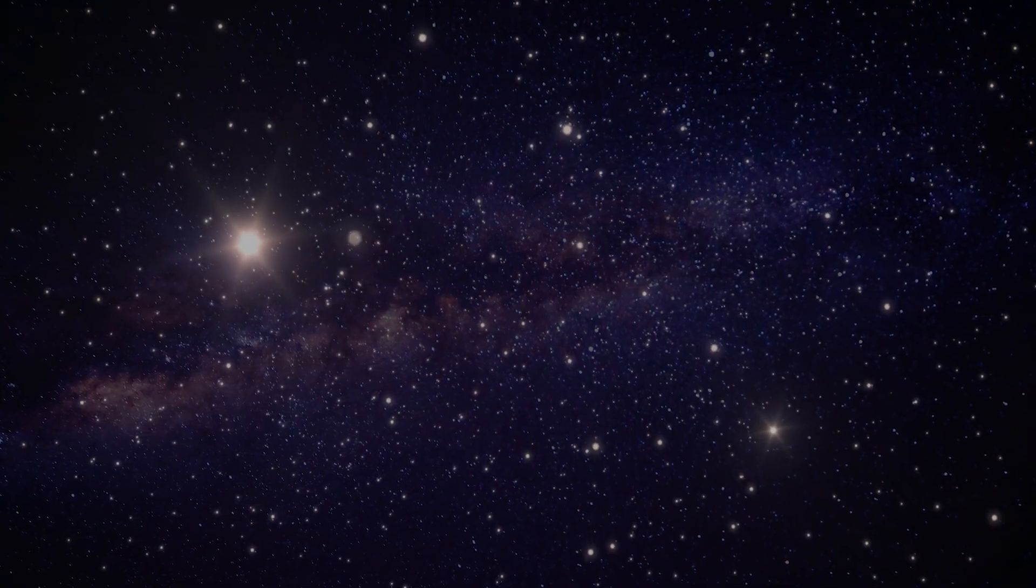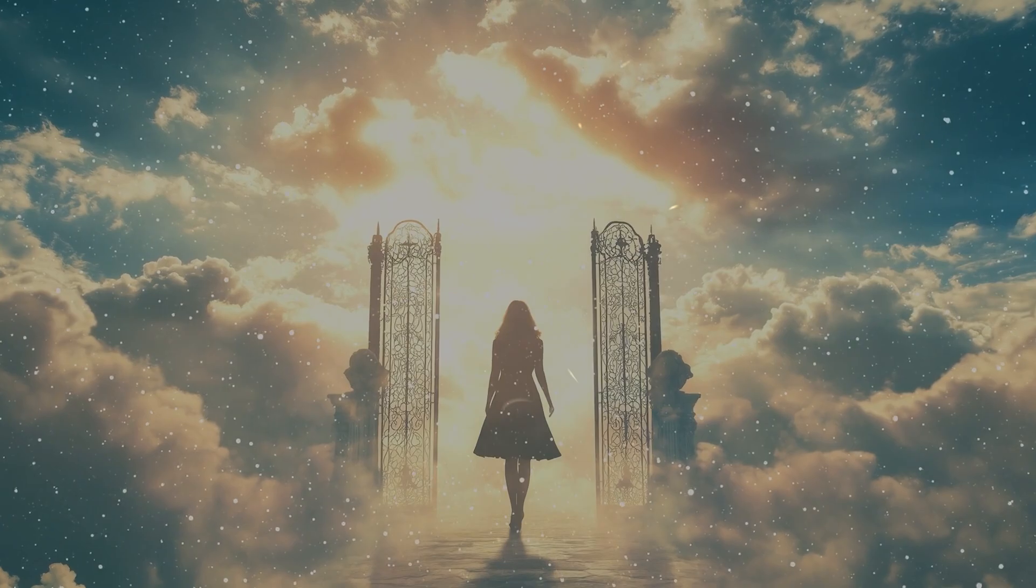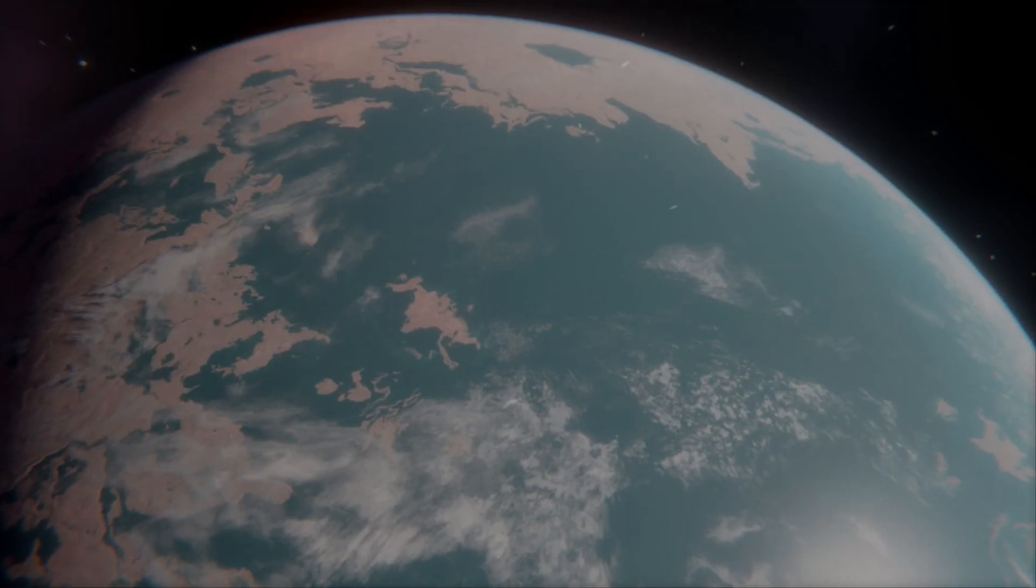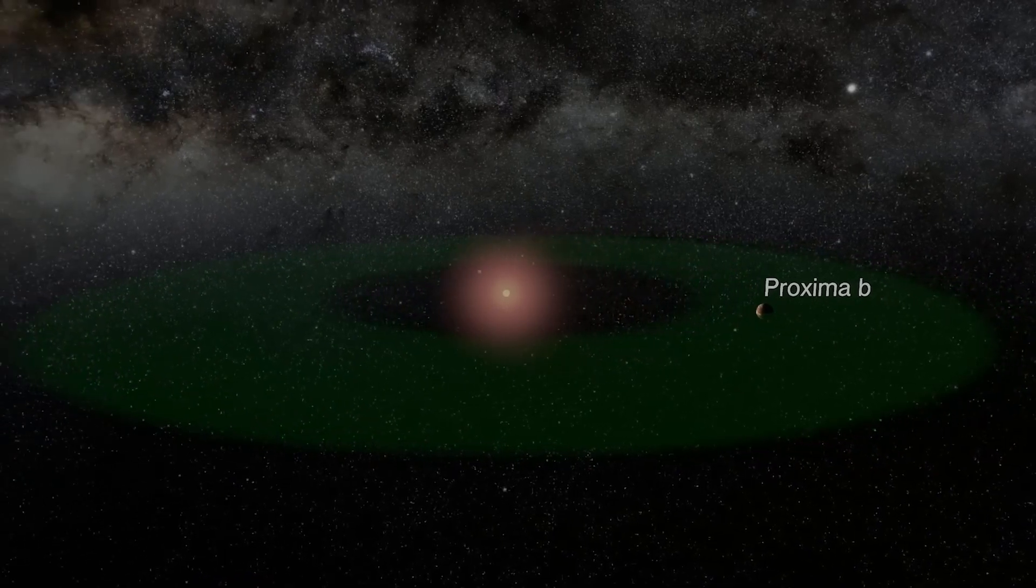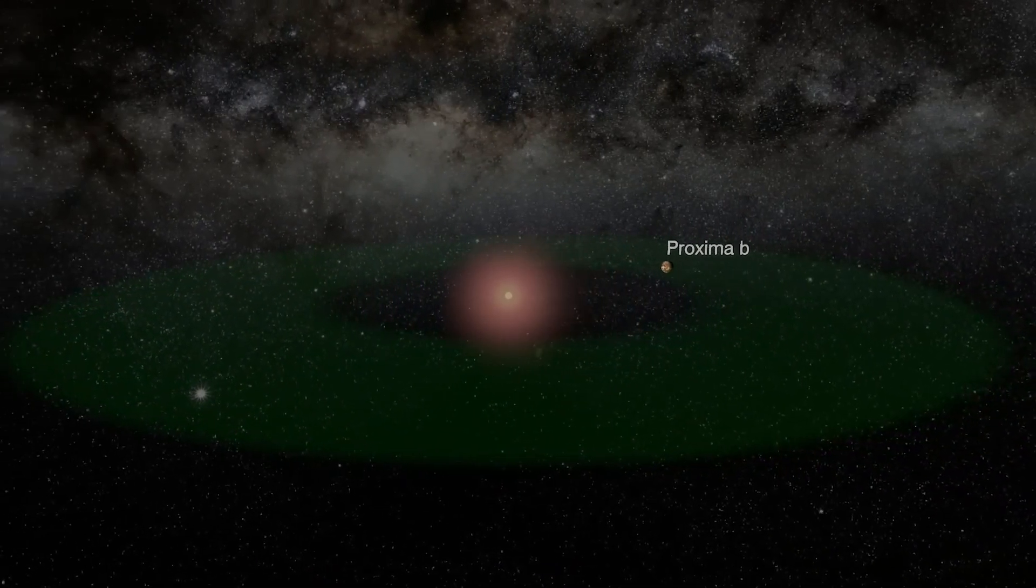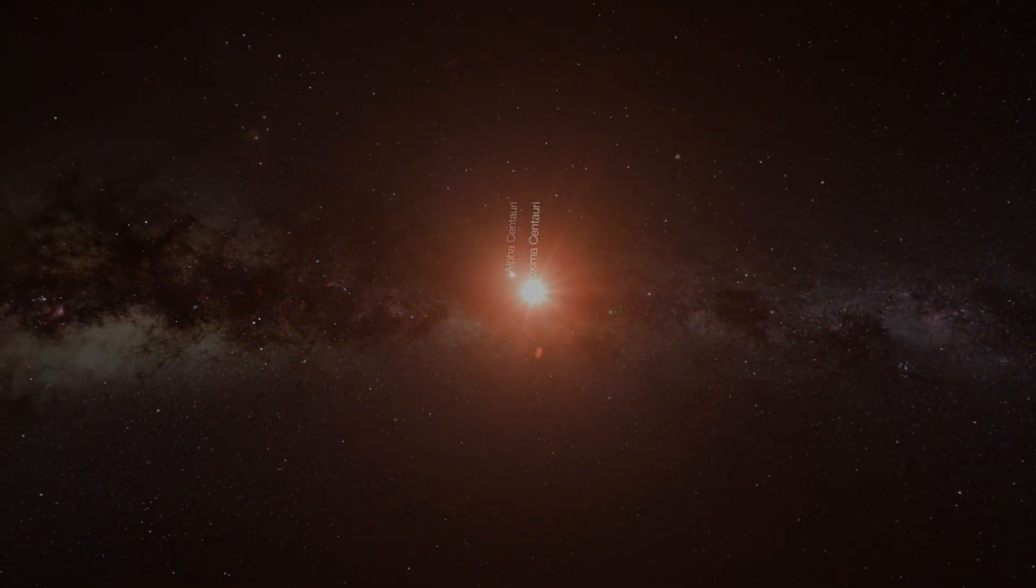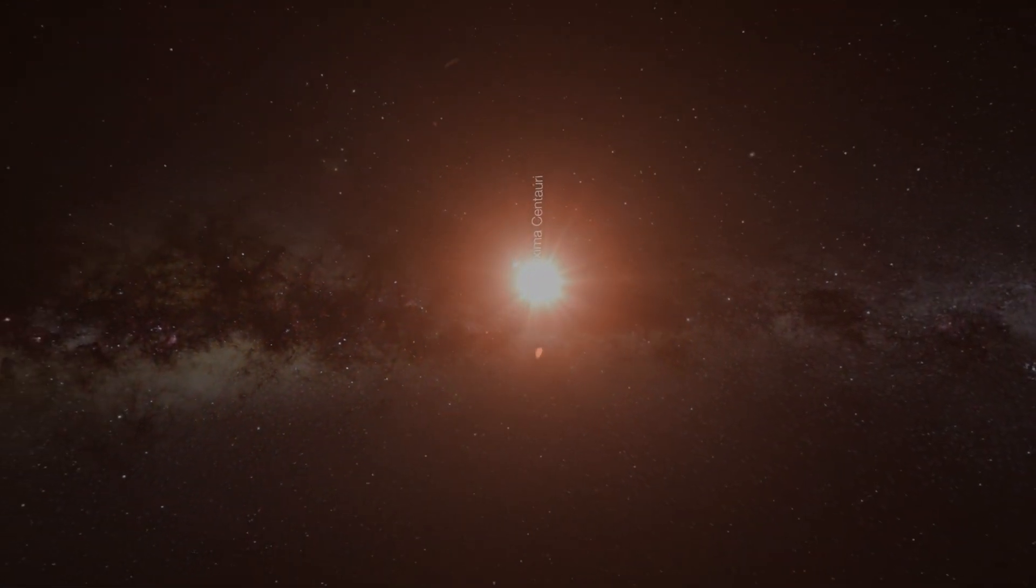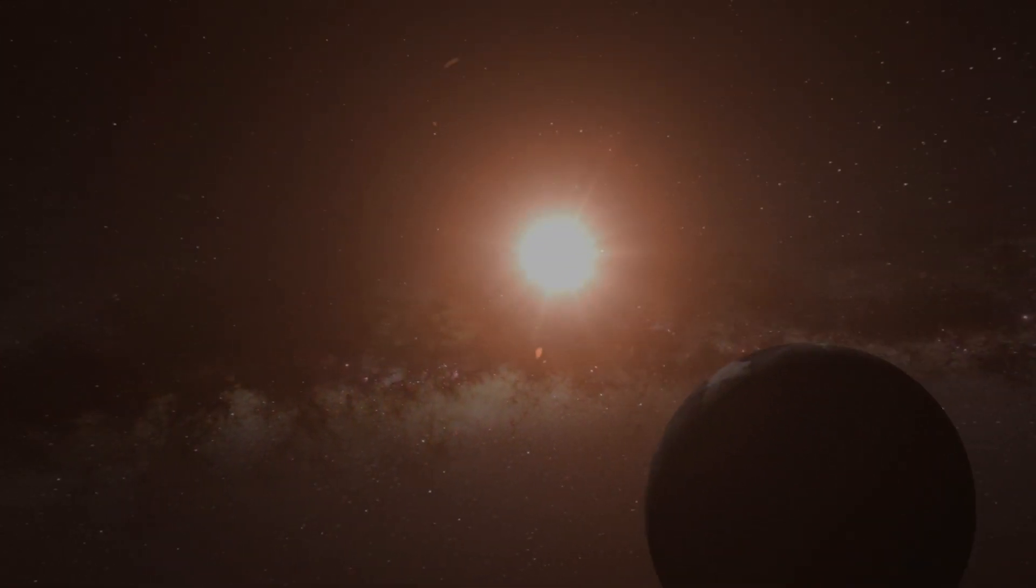Given the vast and varied environments in the Universe, the search for life can't be limited to Earth-like conditions. For example, planets orbiting red dwarf stars, though not as warm or bright as our Sun, could still support life. Red dwarfs live longer than larger stars, giving ample time for life to potentially evolve on any planets within their habitable zones.